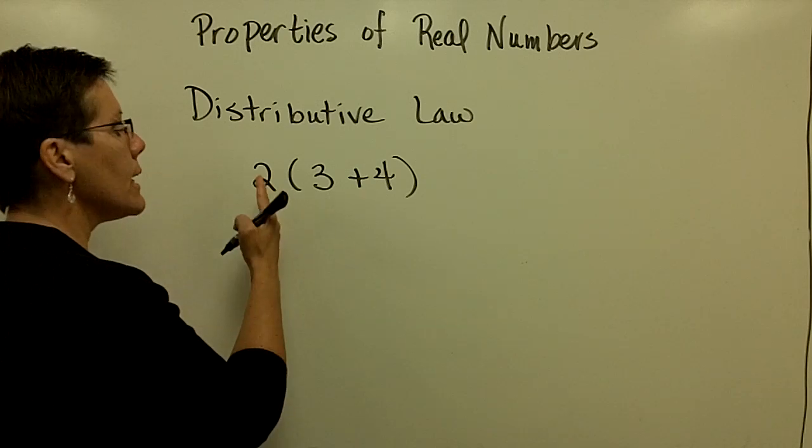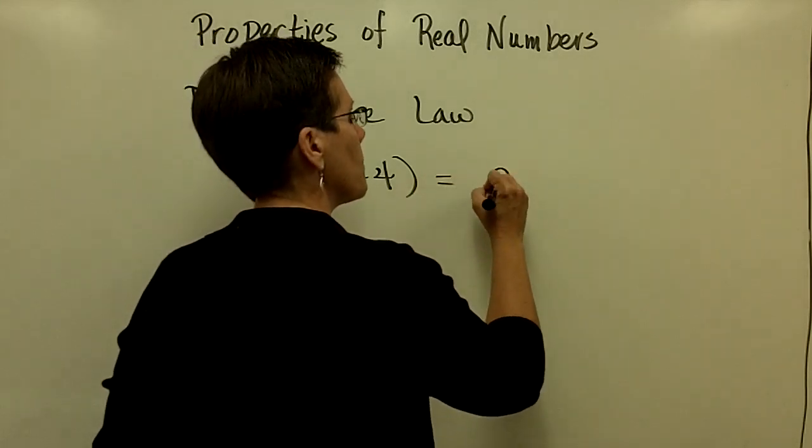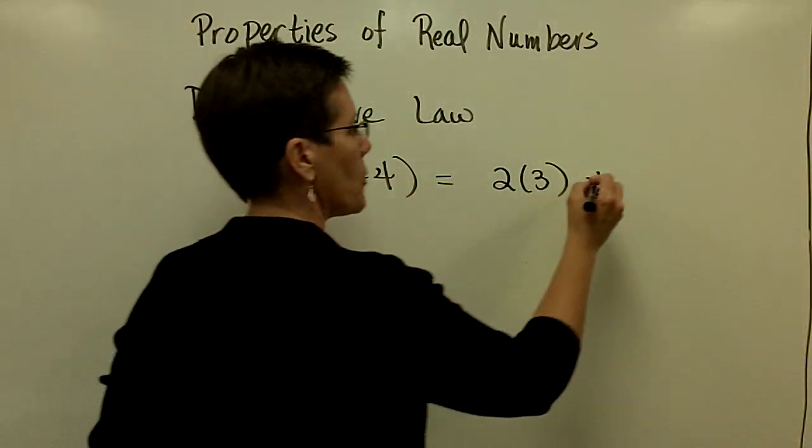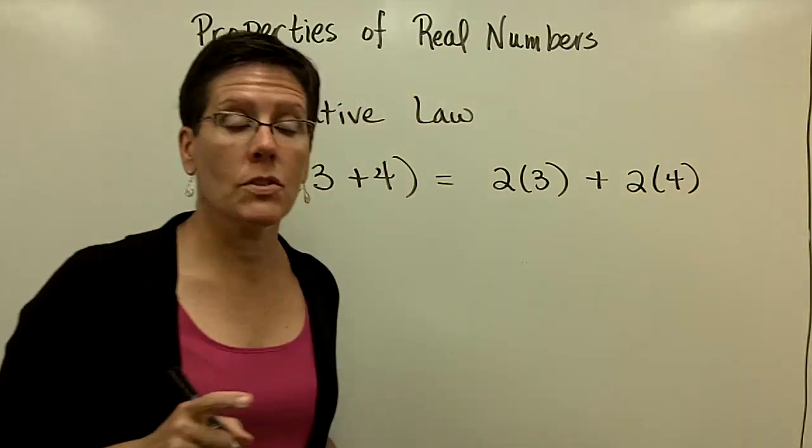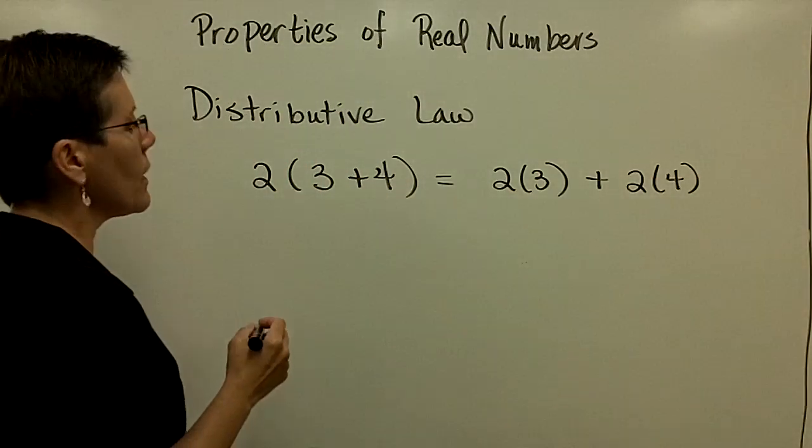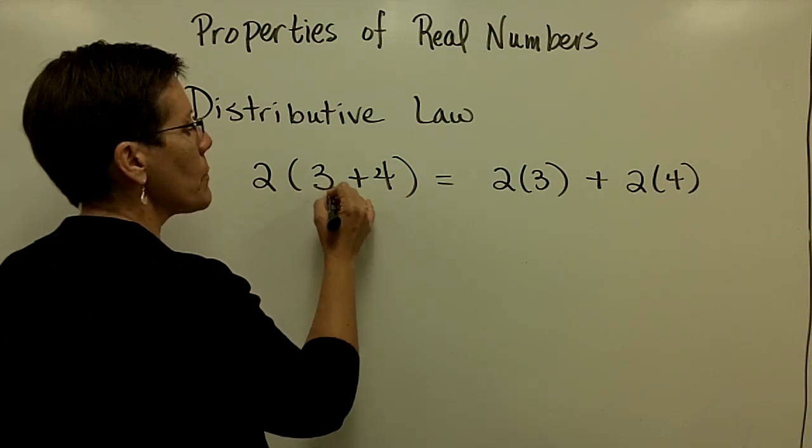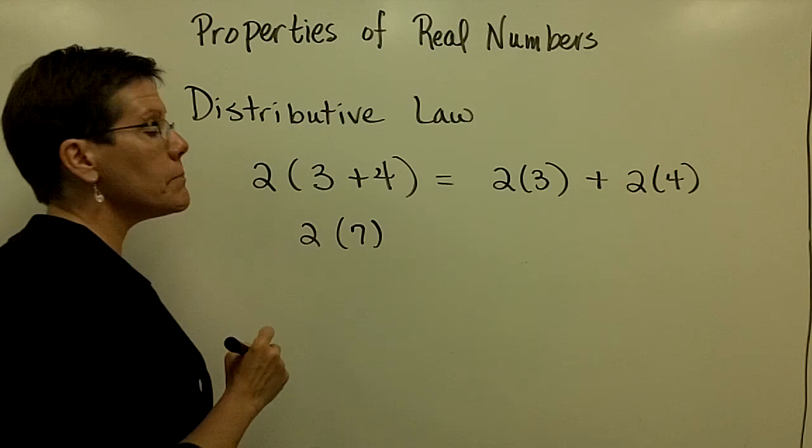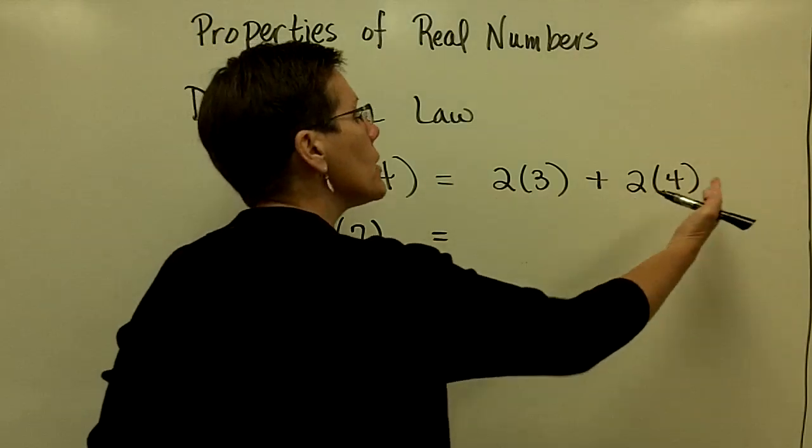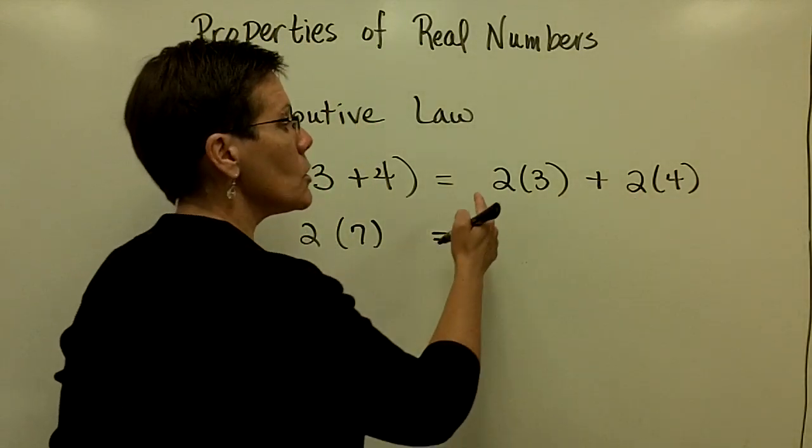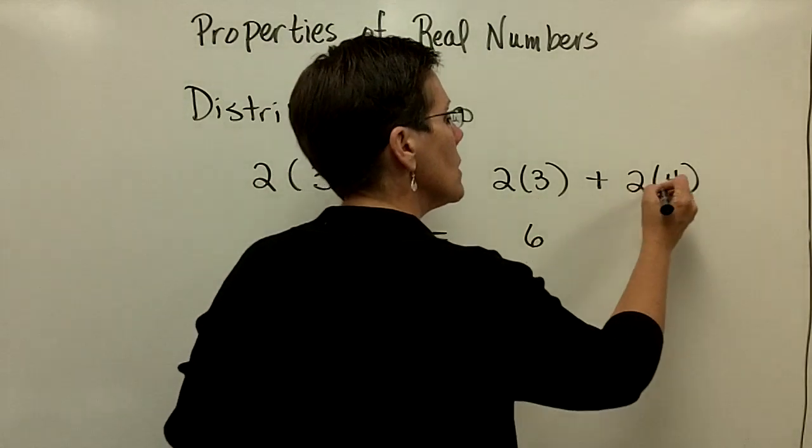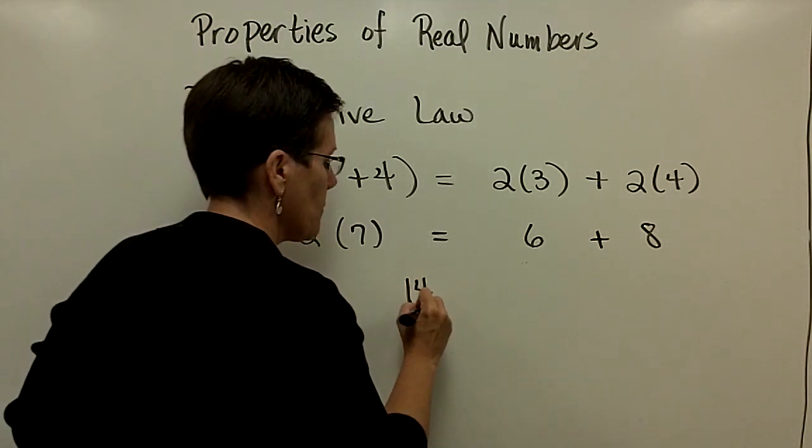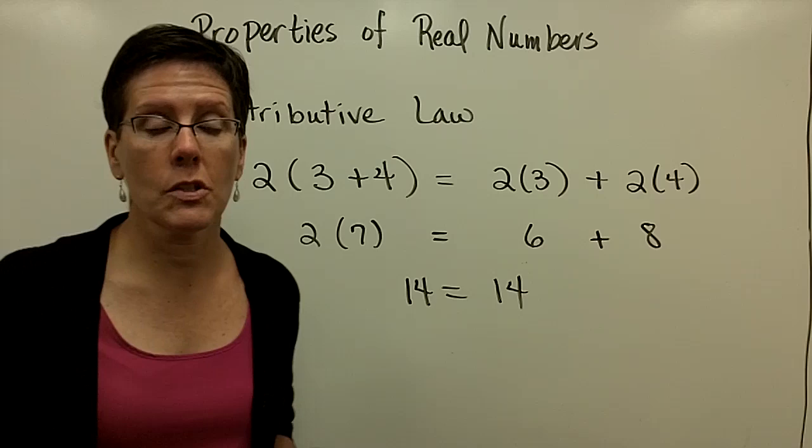The distributive law says that I can take that 2 times that 3, and in this case, because I'm adding, that 2 times that 4, and I would get the same results. So numerically, let's look at this via order of operations. Over here, order of operations says you should do what's in the parentheses first, which is add 3 and 4 and get 7, and then multiply it by 2. Over here, order of operations says that you'd multiply first. So 2 times 3 is 6, 2 times 4 is 8, and then you'd add. Either way, you get 14 as a result for this problem.